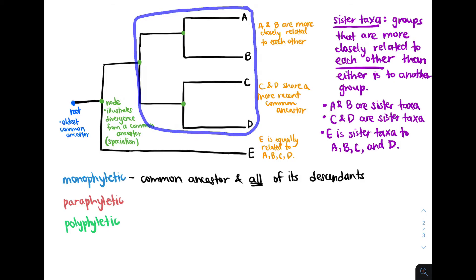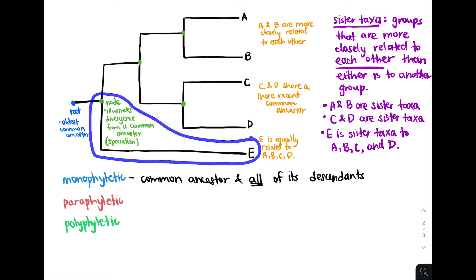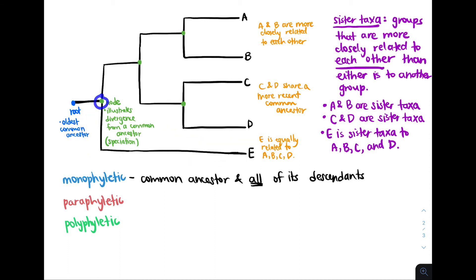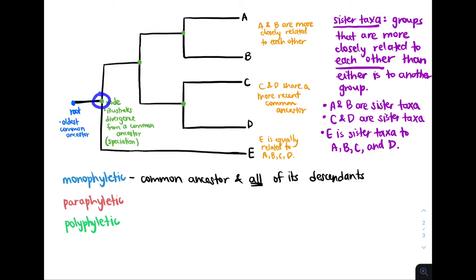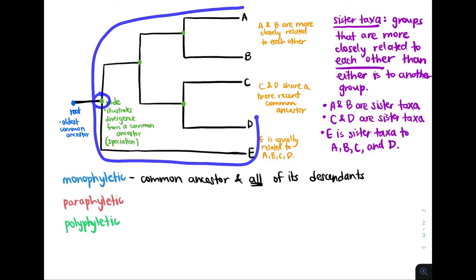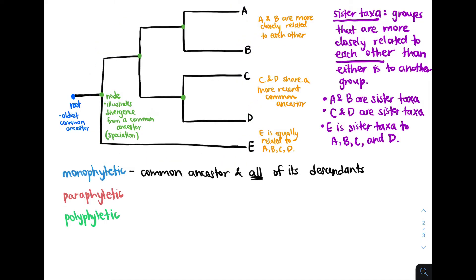Now, is E by itself a monophyletic group? The node that represents E's common ancestor actually branches into A, B, C, and D as well. Therefore, E alone is not a monophyletic group, but A, B, C, D, and E together — as all descendants of that common ancestor — are a monophyletic group. One quick way to count all monophyletic groups in a phylogenetic tree is to count the number of nodes. In this tree, there are four nodes, so there are four monophyletic groups.